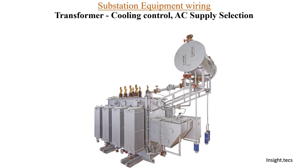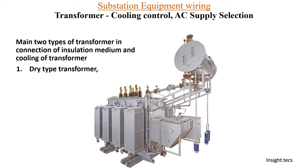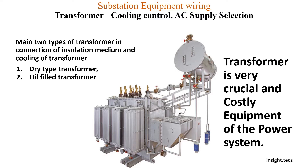Continuing in today's video about substation equipment wiring, specifically we are going to learn about cooling control AC supply selection. In the previous video, we have seen that there are basically two types of transformers — dry type and oil type transformers. For oil type transformers, we have seen different kinds of cooling systems. As we know, the transformer is the most crucial and costly equipment, so taking care of its cooling is very important.